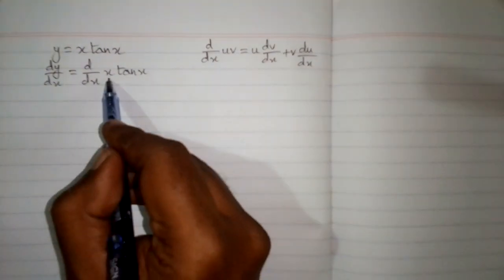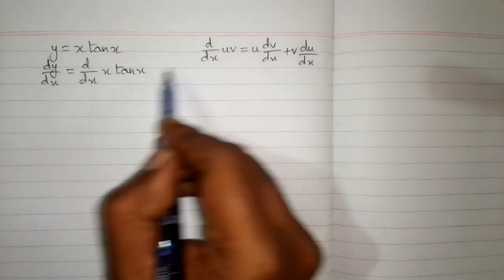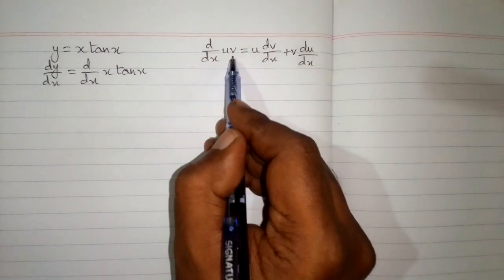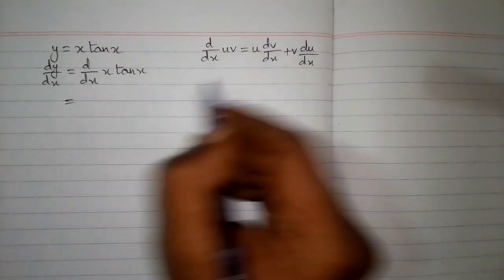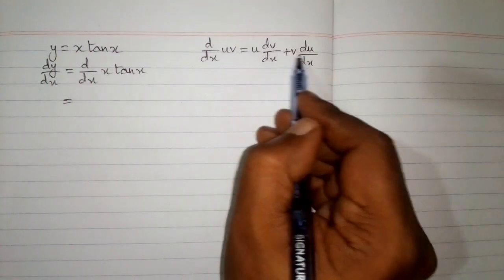We can see that we have x in place of u and tangent of x in place of v. So we will put the values of u and v in this formula.